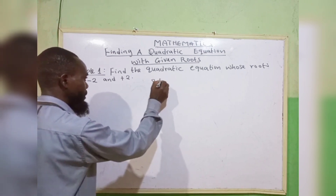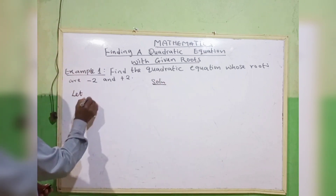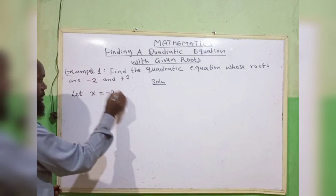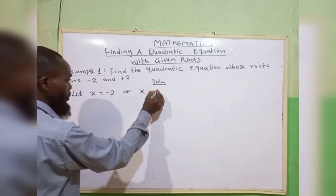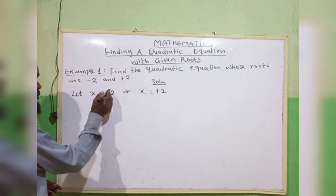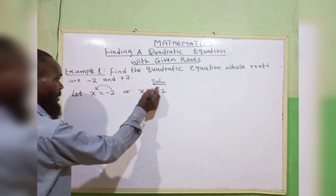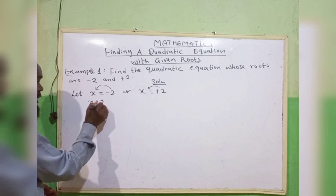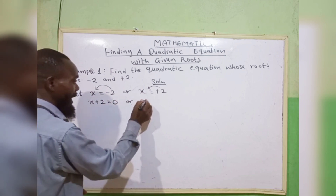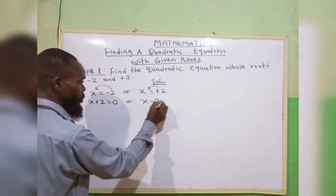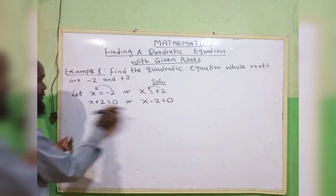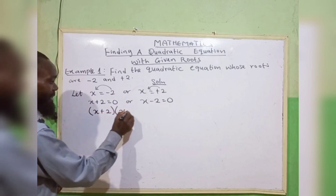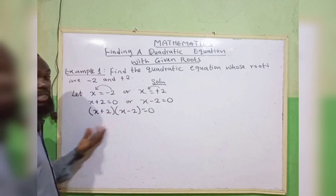To solve this, let x equal to minus 2, or x equal to plus 2. The next thing is to move minus 2 and plus 2 across. So we have x plus 2 equals 0, or x minus 2 equals 0. We take them together: open bracket, (x + 2)(x − 2) equals 0.